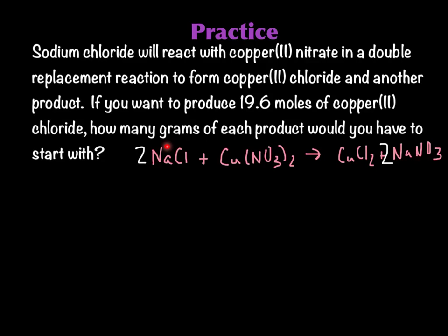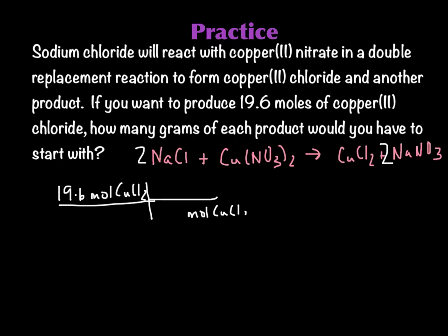Let's start that out. We have 19.6 moles of CuCl₂. Down here we write moles of CuCl₂ — we copy it down every time. Now I can go anywhere I want on the action line because I'm at moles, so I'm going to go to moles of Cu(NO₃)₂. You decide which goes on the bottom because of what you were given — that gets copied down. Then you look at your coefficients in the balanced chemical equation. CuCl₂ has nothing in front of it — understood one. Cu(NO₃)₂ has nothing in front of it — understood one. So it's going to be a one-to-one ratio, and we've successfully switched over from CuCl₂ to Cu(NO₃)₂.